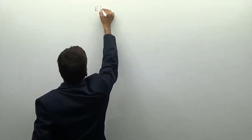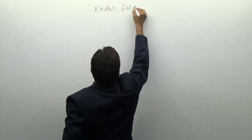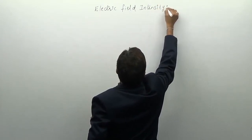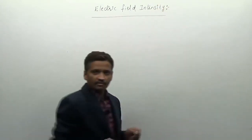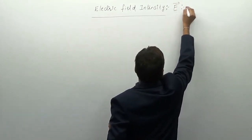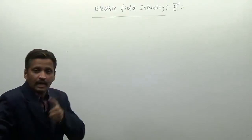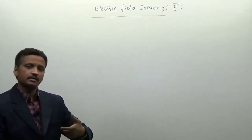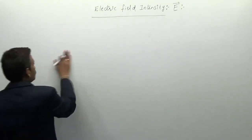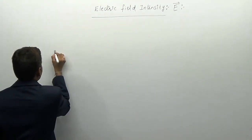The heading is Electric Field Intensity, which is denoted by E vector. Let us first define this electric field intensity. This will be defined by using the same concept which is Coulomb's law. To define electric field intensity, let us take the same concept of Coulomb's law.